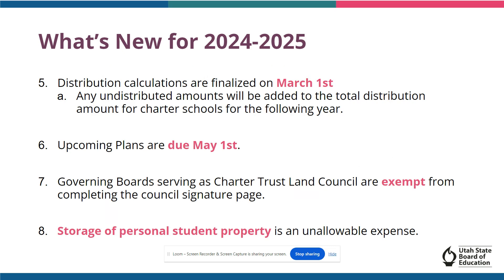Beyond election procedures, there are also a few more changes for the 2024-2025 school year regarding due dates, council signature forms, and unallowable expenses. First, distribution calculations are finalized on March 1st, and any undistributed amounts will be added to the total distribution amount for charter schools for the following year. Another important date is May 1st, when upcoming plans are due. In regards to council signature forms, governing boards serving as chartered trust land councils are exempt from completing the council signature form. Finally, any purchases related to the storage of personal student property are considered unallowable expenses. If you have any further questions on these changes, please feel free to contact the school land trust team.